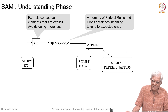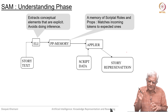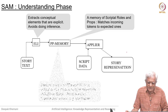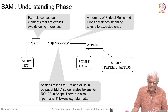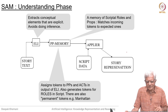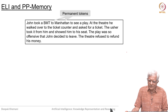PP memory — where PP stands for picture producers — is a memory of scripted roles and props. It matches incoming tokens to expected ones. PP memory has some idea of the roles and props in the script and the category of incoming information, and it does allocation there. It assigns tokens to props and acts — acts are actions in the output of LE — and also generates tokens for roles in the scripts. There are also permanent tokens, for example Manhattan, New Delhi, and so on — these are permanent tokens known to everyone. For example, in the story 'John took a BMT to Manhattan to see a play,' BMT and Manhattan are permanent tokens.